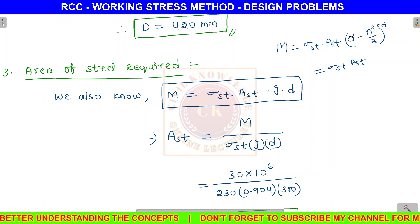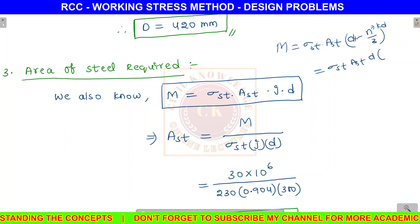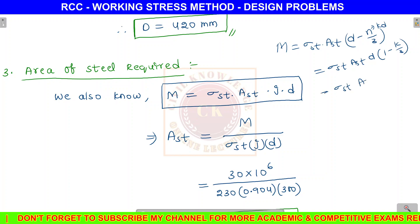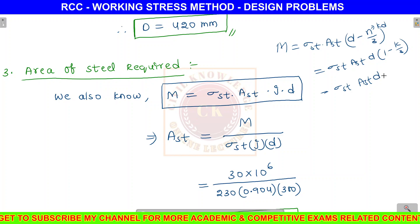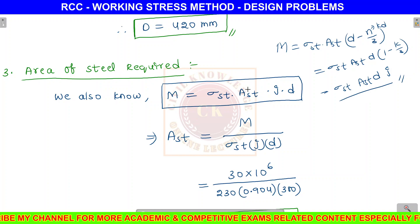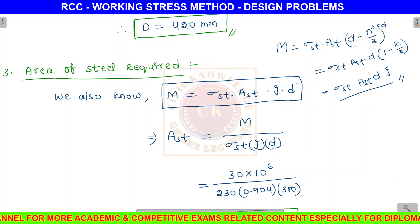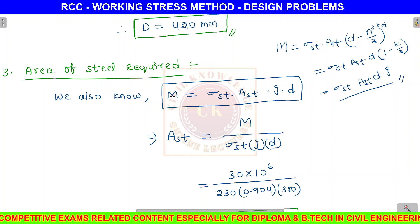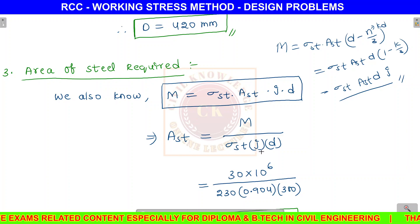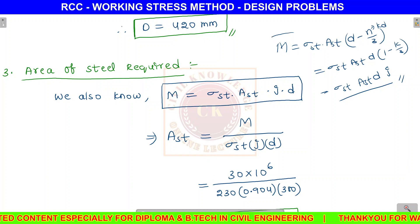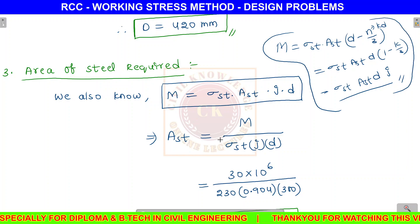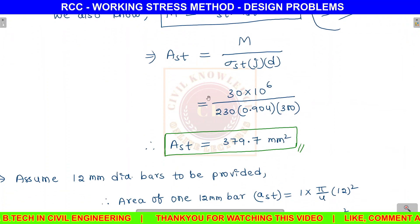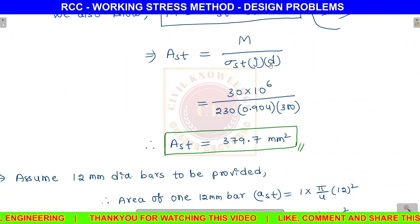So M equals sigma st into Ast into j into d. Therefore Ast equals M divided by (sigma st into j into d). Substituting M equals 30 into 10 to the power 6 N·mm, sigma st equals 230, j equals 0.904, and d equals 380 mm, we get Ast equals 379.7 mm².